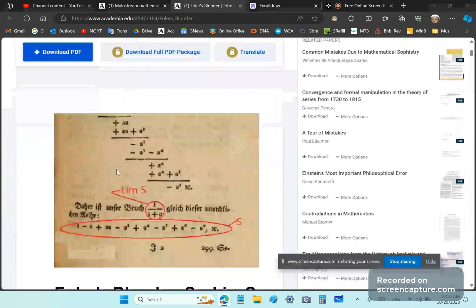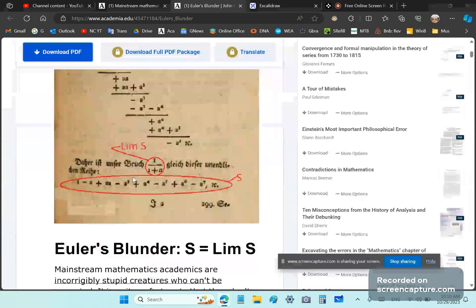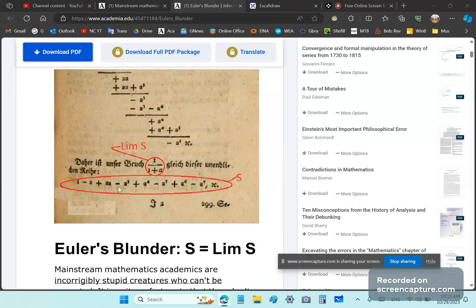So he says here in his Elements of Algebra: Daher ist unser Bruch, 1/(1+a), gleich dieser unendlichen Reiche: 1 - a + a² - a³, et cetera. What that means is, literally word-for-word translation: Therefore, is our fraction equal this unending series, or infinite series.